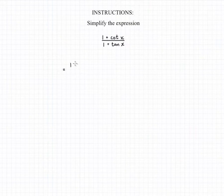In order to simplify this expression, we are first going to express each of the trig functions in terms of sine and cosine. So for cotangent of x, we're going to substitute in cosine of x over sine of x, and for tangent of x, we're going to substitute in sine of x over cosine of x.